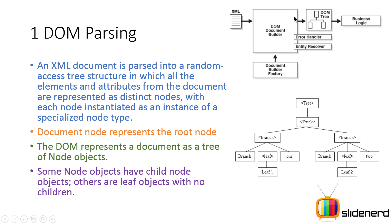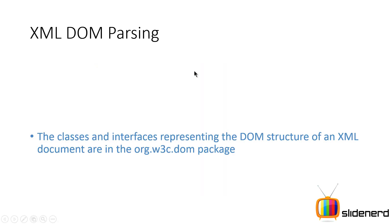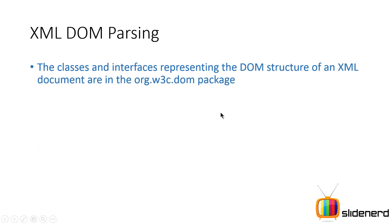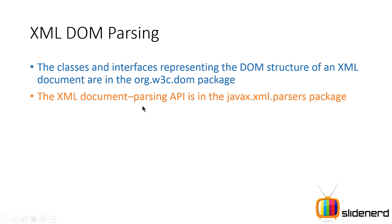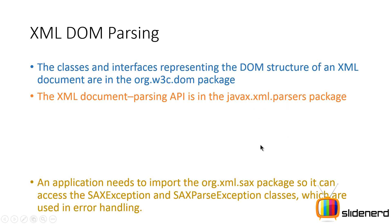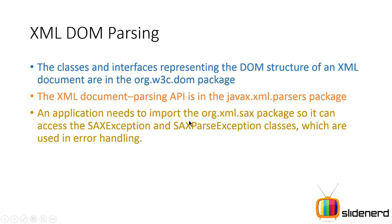We'll be talking about an example of how to use all this — how to parse an XML document and get its data. The classes you want to work with are inside the org.w3c.dom package. XML parsing classes are inside the javax.xml.parsers package. You'll also be using classes like SAXException and SAXParseException from the org.xml.sax package.